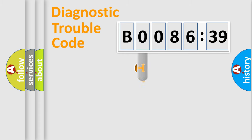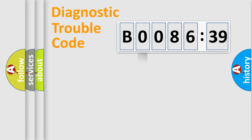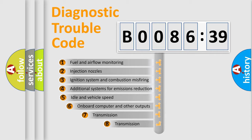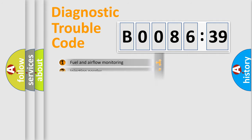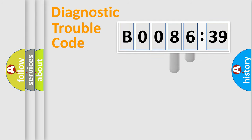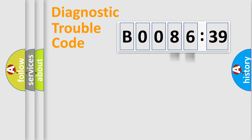This distribution is defined in the first character of the code. If the second character is expressed as zero, it is a standardized error. In the case of numbers 1, 2, or 3, it is a manufacturer-specific error. The third character specifies a subset of errors, valid only for the standardized DTC code. Only the last two characters define the specific fault of the group.